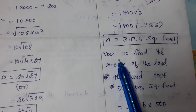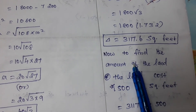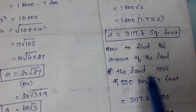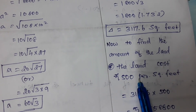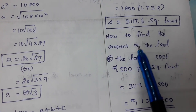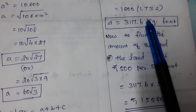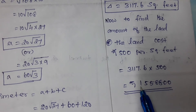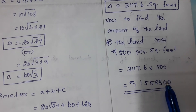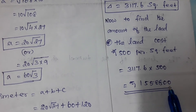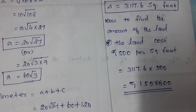Finding the area and then the total cost: area is calculated and multiplied by Rs. 500 per square feet. The total amount needed to purchase the land is Rs. 1,55,800 approximately.